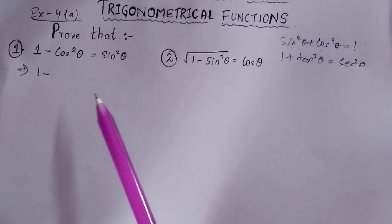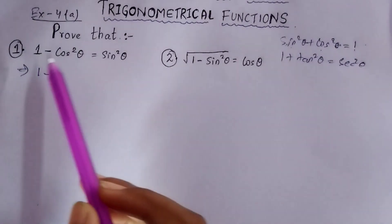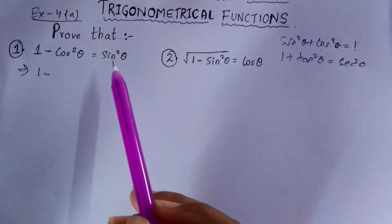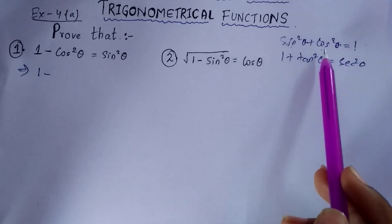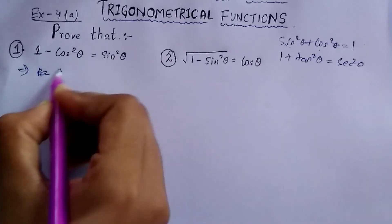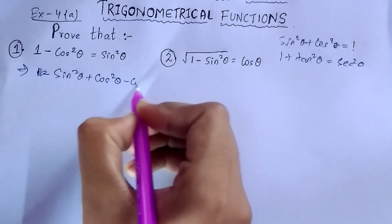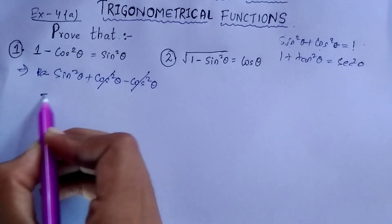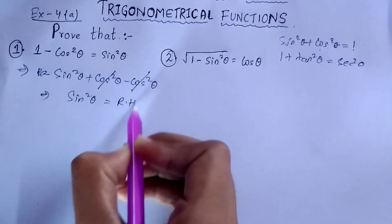The first question: prove that 1 − cos²θ = sin²θ, that is LHS equals RHS. We know that sin²θ + cos²θ = 1, so 1 can be written as sin²θ + cos²θ. So it will be sin²θ + cos²θ − cos²θ. The +cos²θ and −cos²θ cancel, and we are left with sin²θ, which is your RHS. Hence proved.